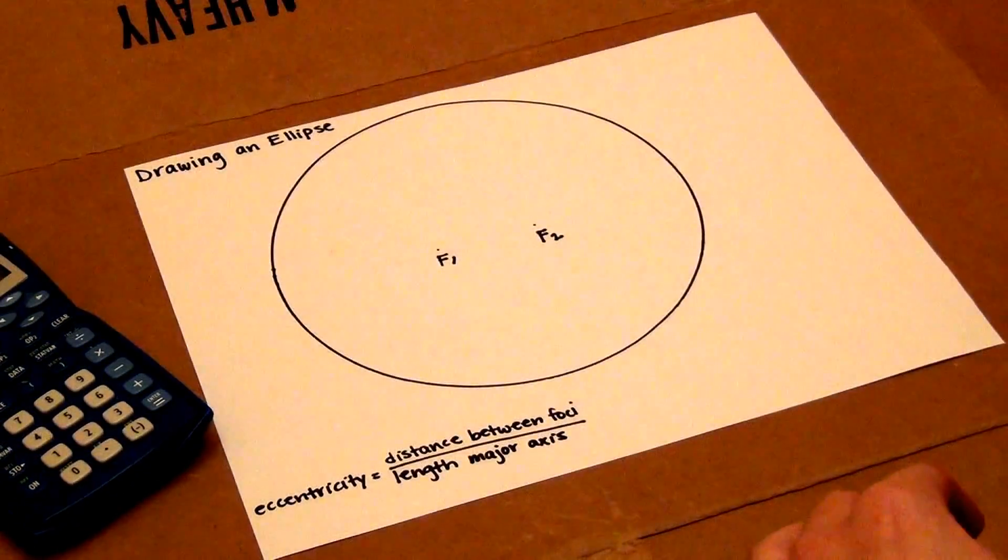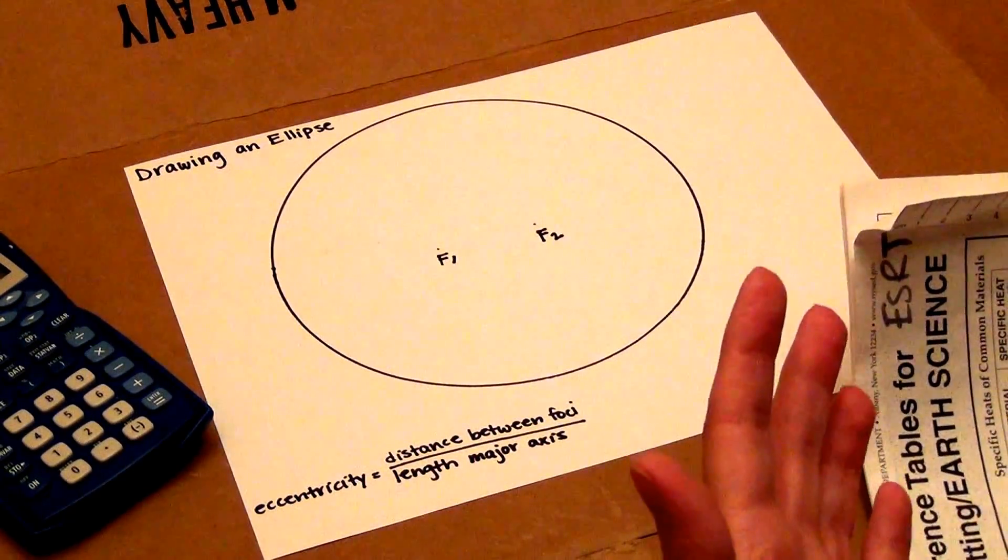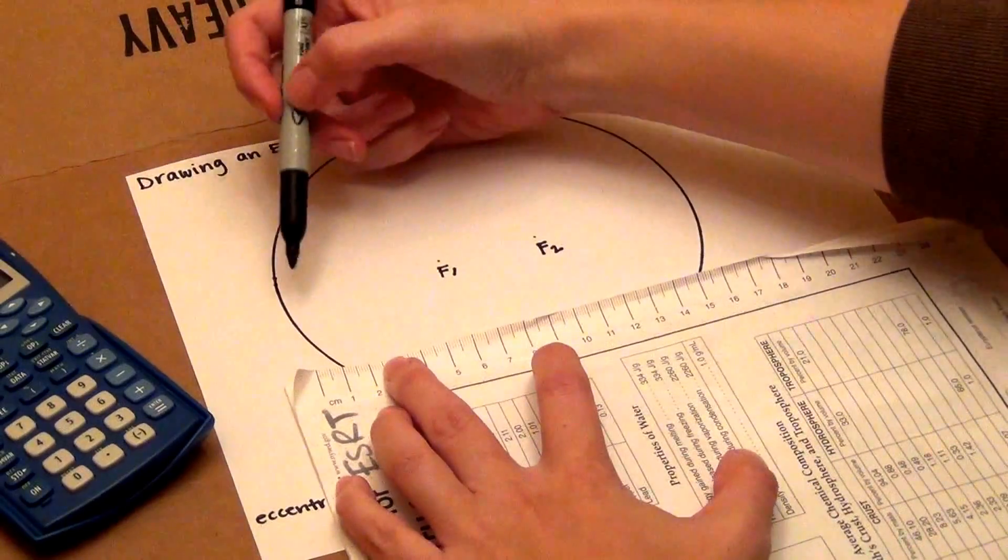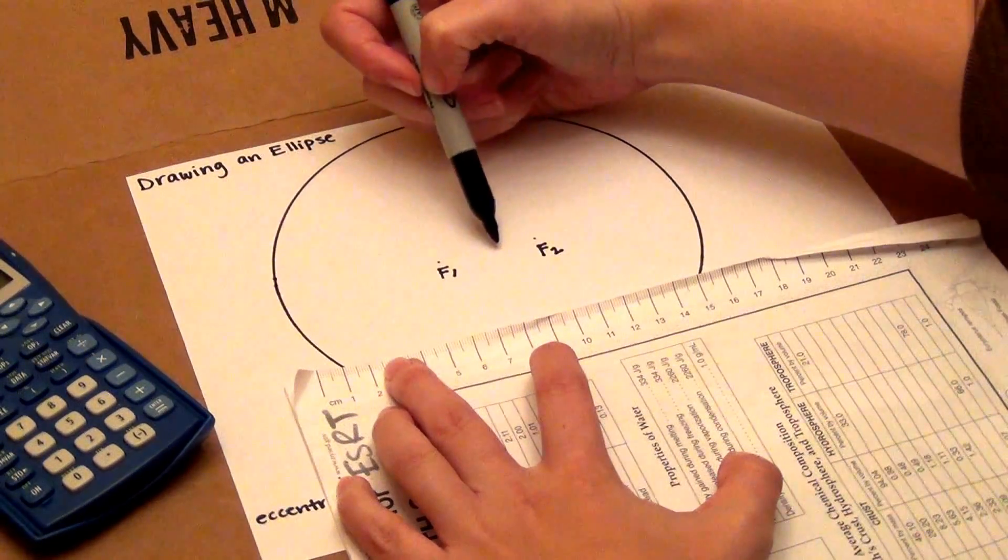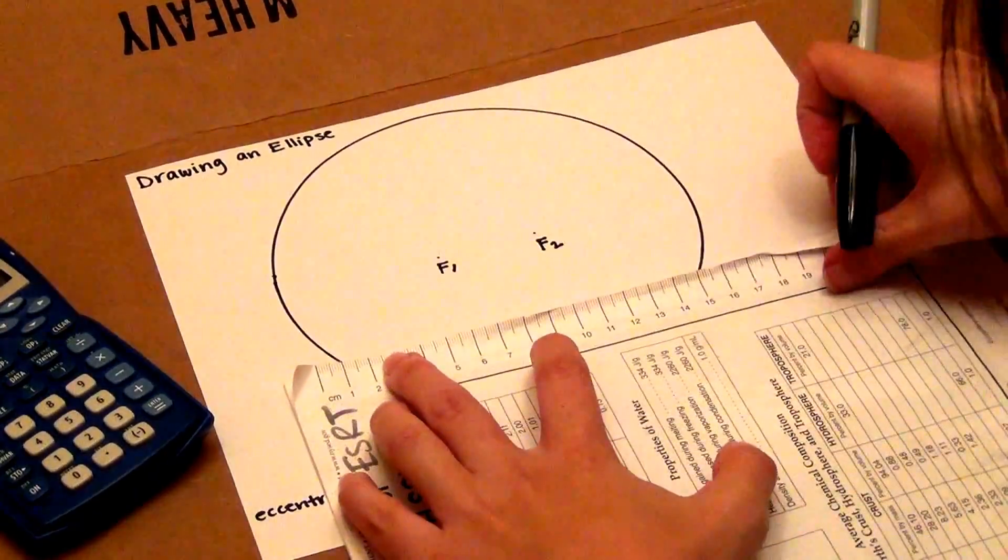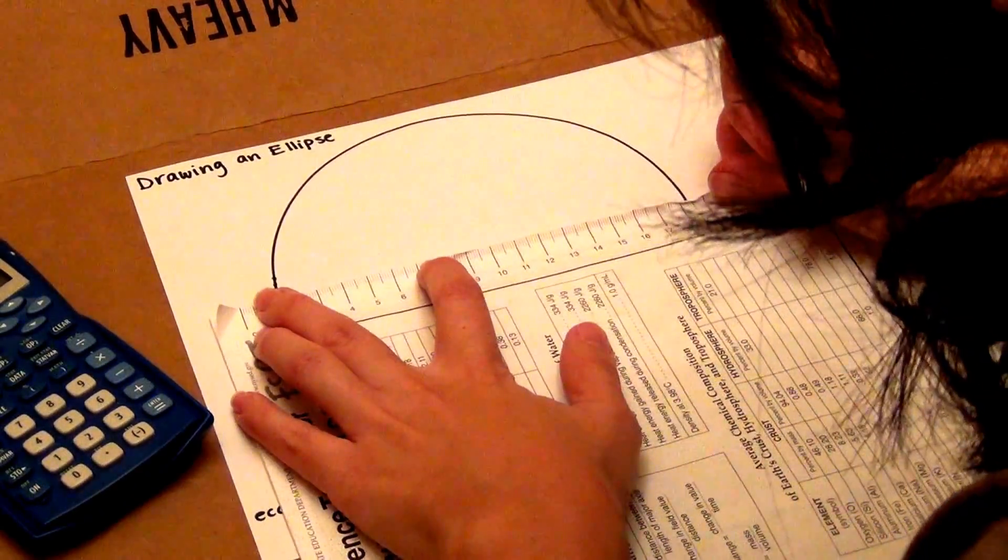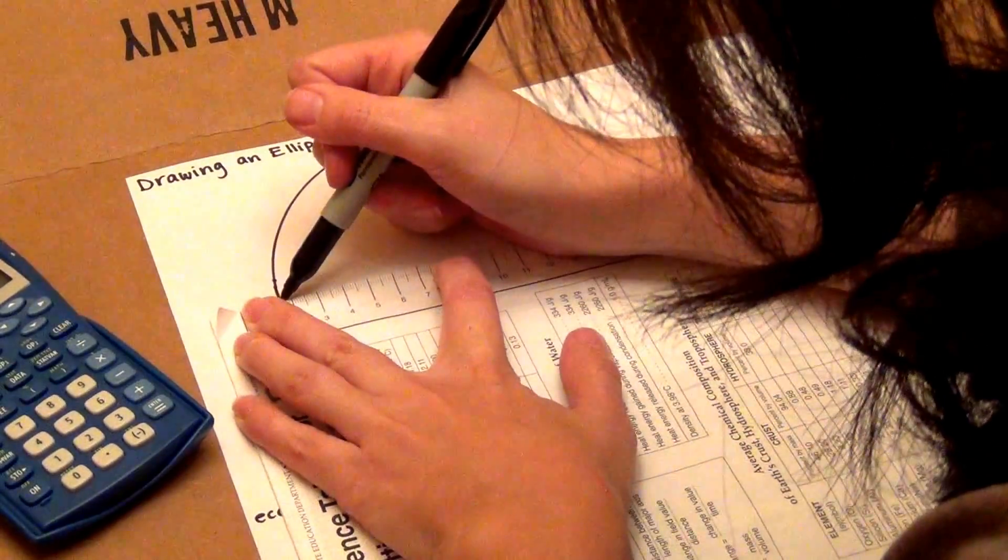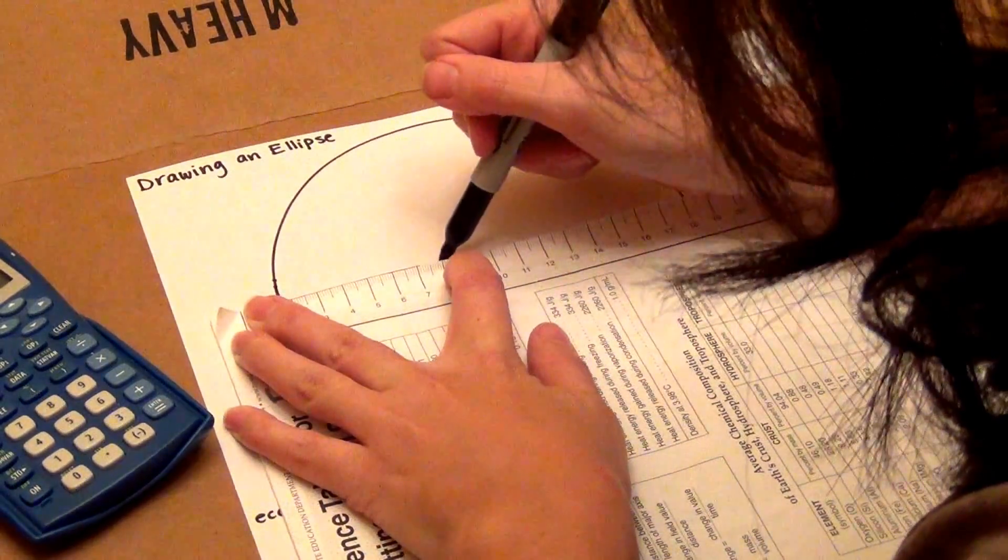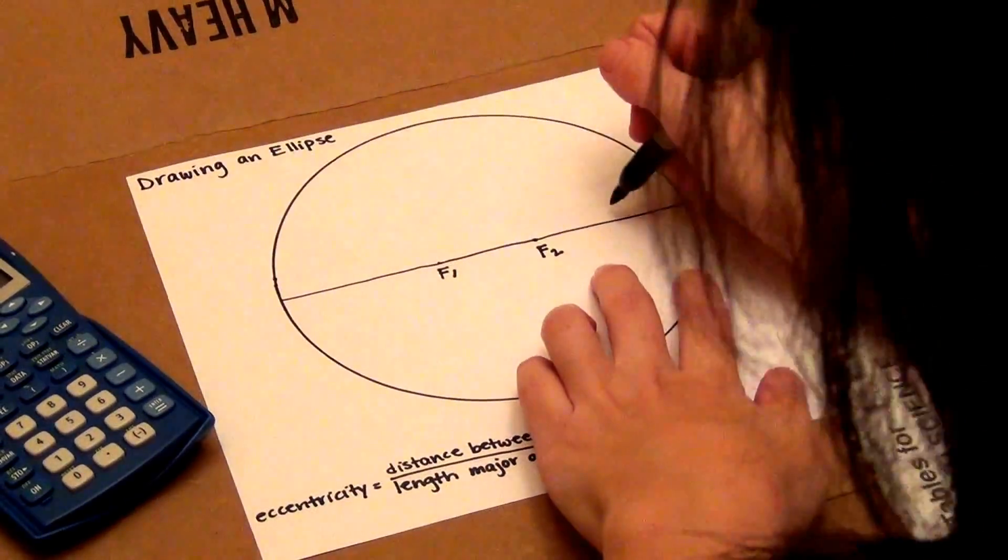In order to calculate the eccentricity of this ellipse, I have to have the length of the major axis. The major axis is a line that goes through the ellipse through both foci points. So I'm going to take a straight edge, in this case my reference table, line it up with both of the foci and draw a line across my ellipse through the foci. This is the major axis.